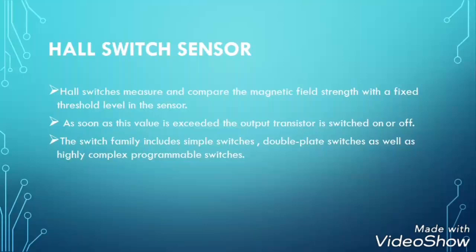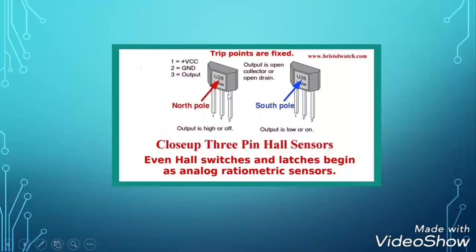Hall effect sensor measures and conveys the magnetic field strength. If we bring the north pole near the sensor, the sensor will be switched off. If we bring the south pole near the sensor, the switch will be switched on.